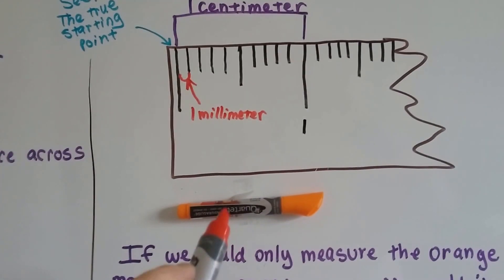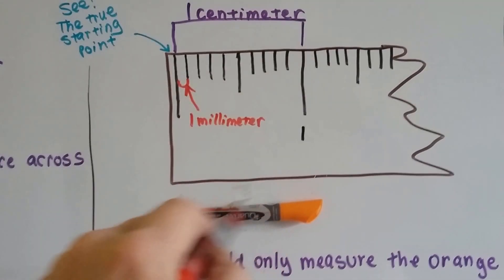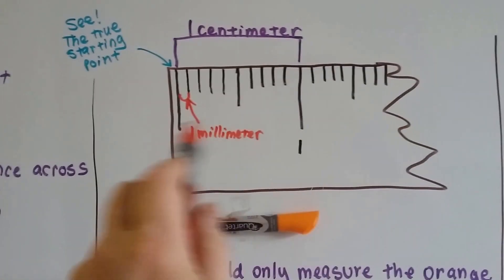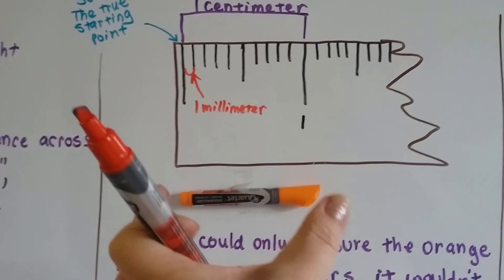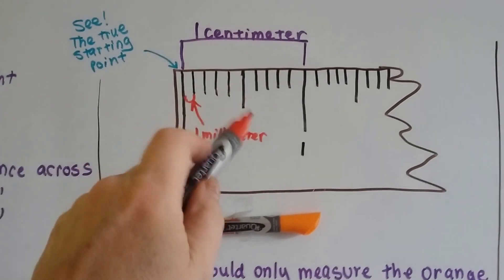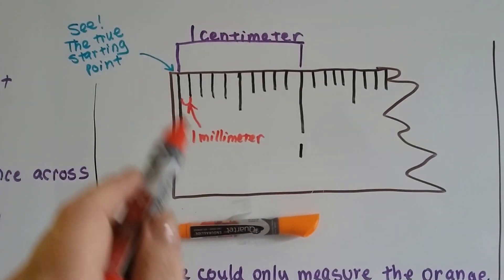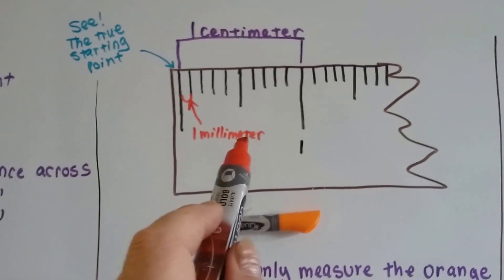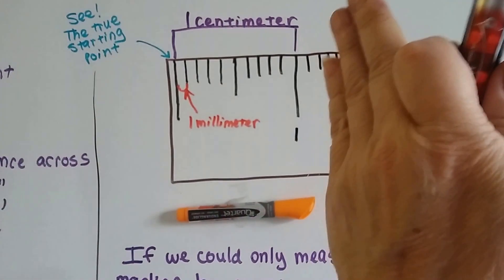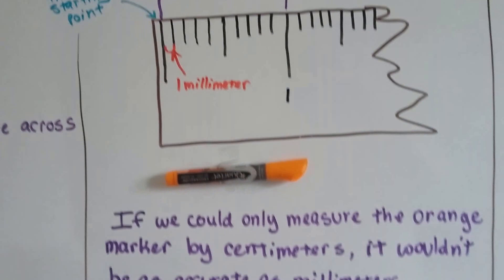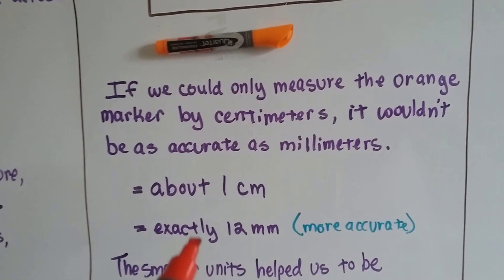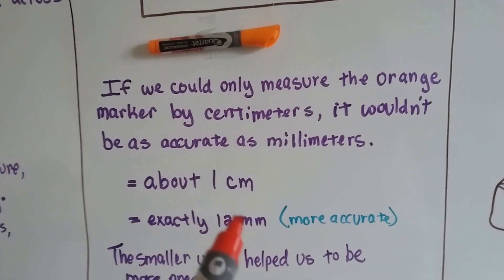If I wanted to measure the pen, I could say it's about a centimeter according to this measure. In real life, it's probably about 5 or 6 inches. But to this measure, it looks like it would be about a centimeter. But if we can use smaller measurements, a millimeter, we can see it's about 12 millimeters. So it's a little more accurate to use the smaller measure.